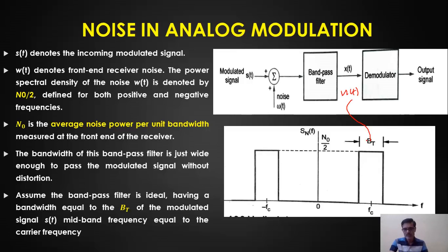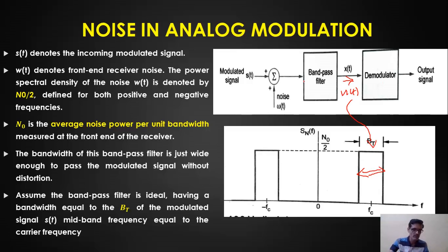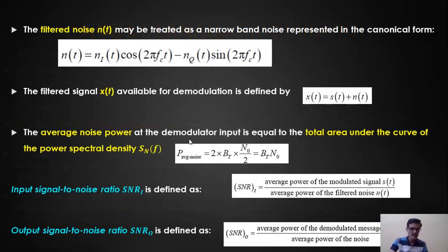The filtered noise n(t) at the output of the bandpass filter has PSD equal to N₀/2 within the bandwidth of 2W hertz. This signal is then given as input to a demodulator, which can be an envelope detector — used for double sideband full carrier — a coherent demodulator for DSB-SC, or an FM demodulator if the received signal is frequency modulated.